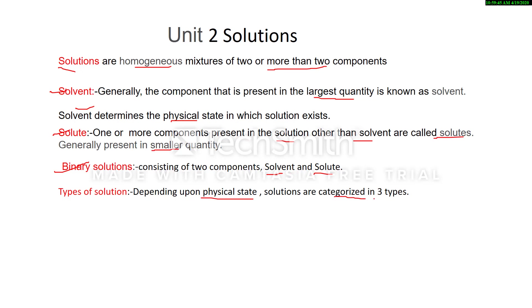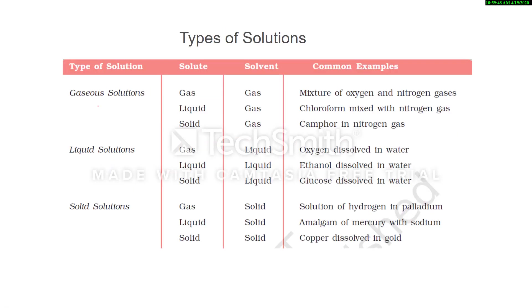Depending on the physical state of solvent, solutions are categorized into three types: gaseous solutions, liquid solutions, and solid solutions. In gaseous solutions, the physical state of solvent is gas; in liquid solutions it is liquid; in solid solutions it is solid. Depending on the physical state of solute, each category may be further divided into three sub-categories.